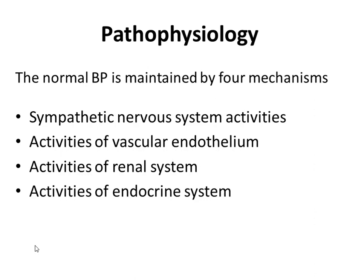Regarding pathophysiology, normal blood pressure is maintained by four factors. The first is sympathetic nervous system (SNS) activity — if blood pressure decreases, activation of the SNS will occur. Increased SNS activity increases heart rate and cardiac contraction, which leads to elevation in blood pressure. The second factor is activation of the vascular endothelium — a single cell layer that lines blood vessels — which produces vasoactive substances and growth factors like nitric oxide. These substances are potent vasoconstrictors and can cause an increase in blood pressure.